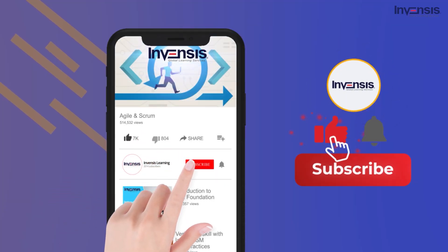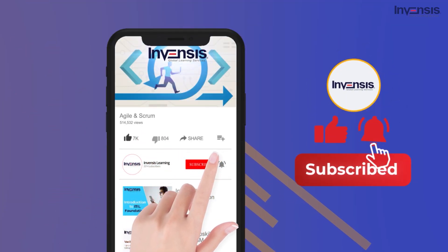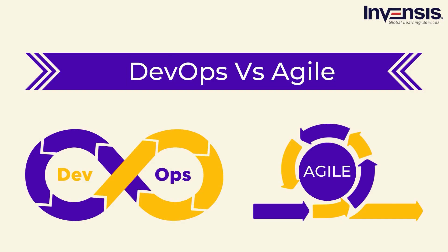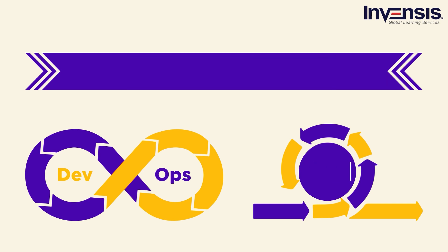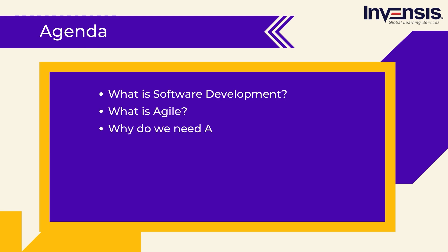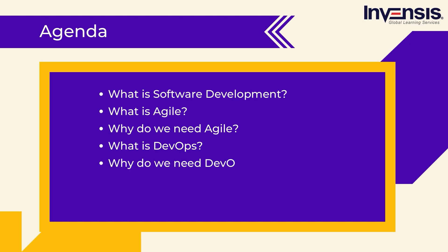Don't forget to subscribe to InvenSys Learning and press the bell icon to get the latest updates. In this video, we will discuss the key differences between DevOps and Agile. First, let us see the agenda: we will start with the history of SDLC, then the definition of Agile and the need for the Agile model, after that DevOps and why we need it, then the differences between DevOps and Agile, and finally we will conclude with the learning path.